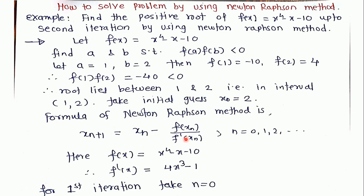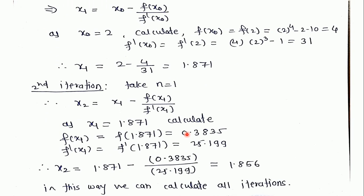The formula for Newton-Raphson method is: xₙ₊₁ = xₙ - f(xₙ) / f'(xₙ). We first calculate the value of the function f(x), then calculate f'(xₙ), which is the derivative of this function. For the first iteration, we take n = 0, giving us x₁ = x₀ - f(x₀) / f'(x₀).